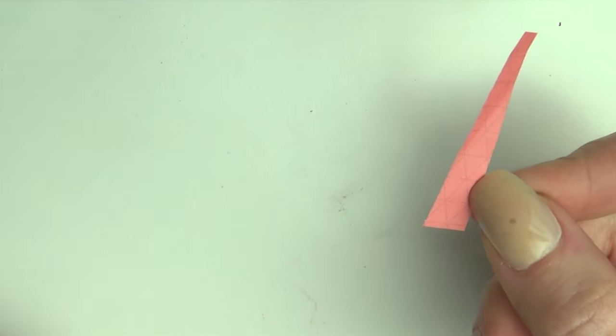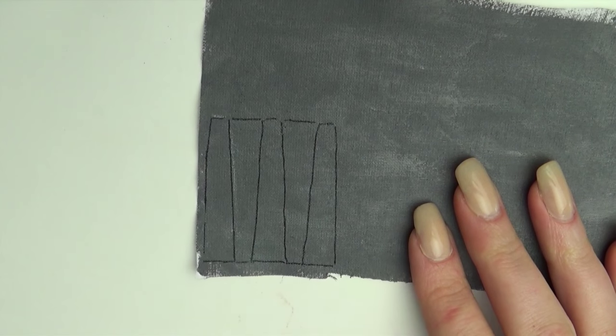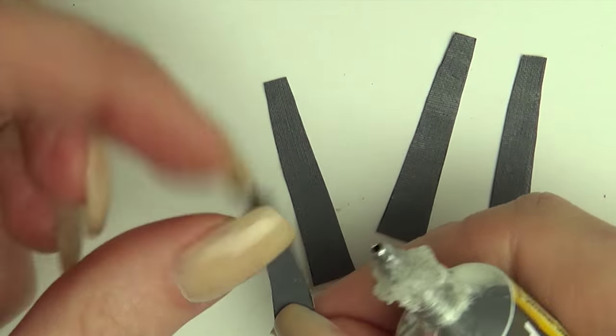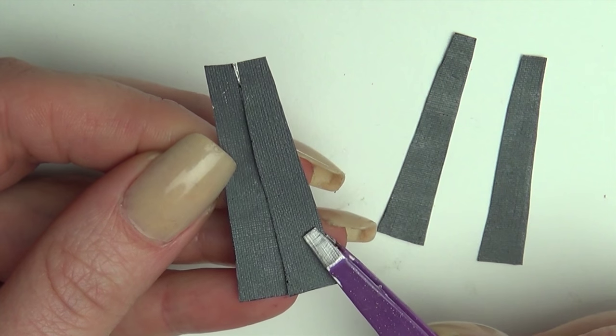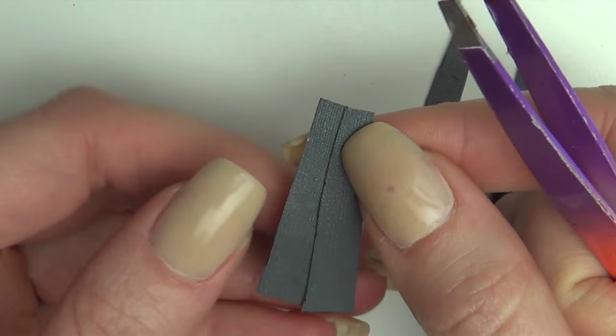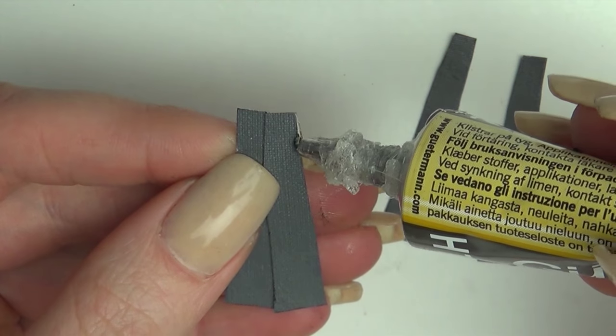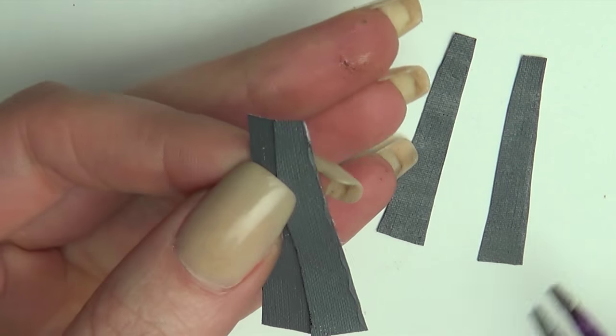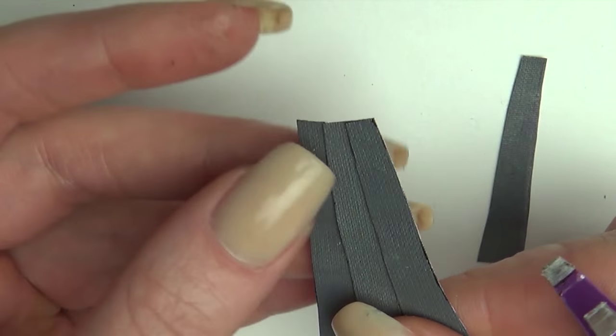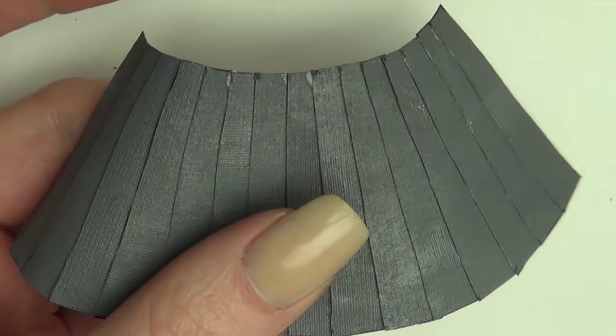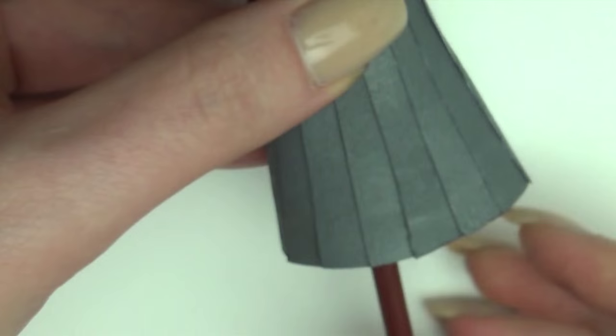Make a stencil like this in the length you want it. I painted some white fabric grey to get the right color. Cut out as many pieces as you need to wrap around the doll and glue them together. Glue the end pieces together around the doll or add a button.